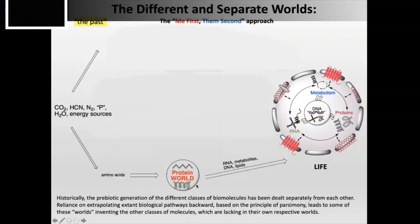The spark discharge experiments make amino acids. You find them in meteorites. So people said first they must have joined somehow to give proteins because amino acids are the building blocks of proteins. Therefore proteins came first and then you were able to make these other complex molecules.